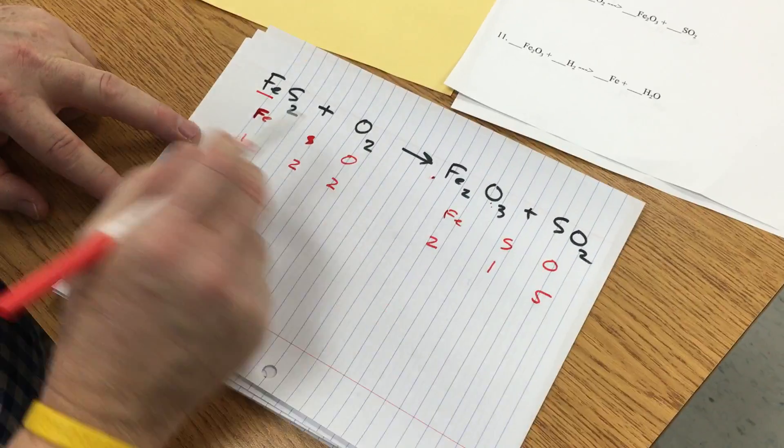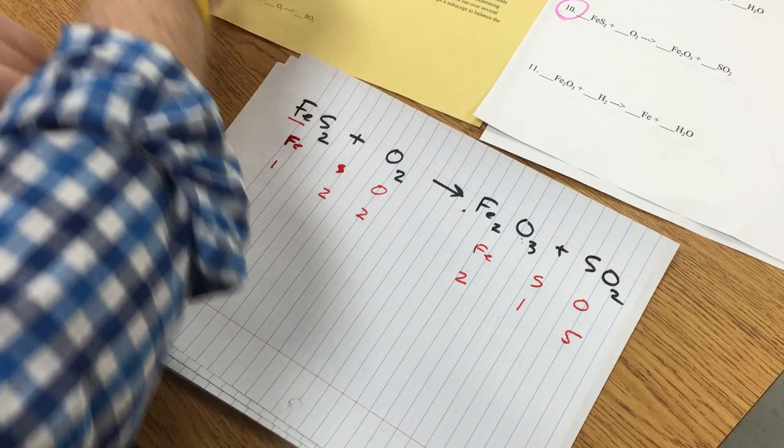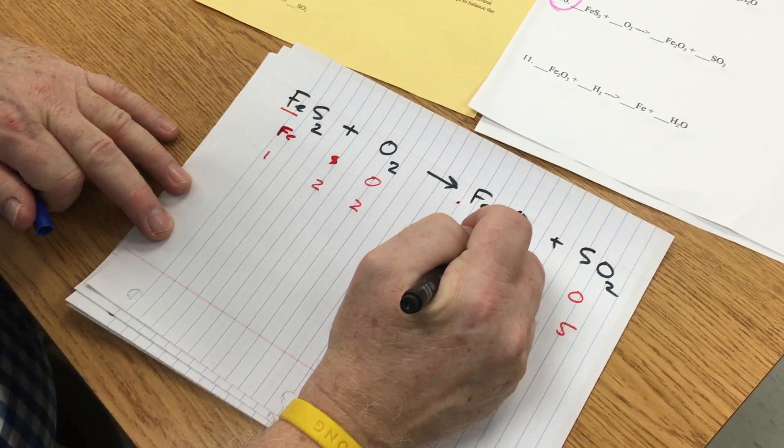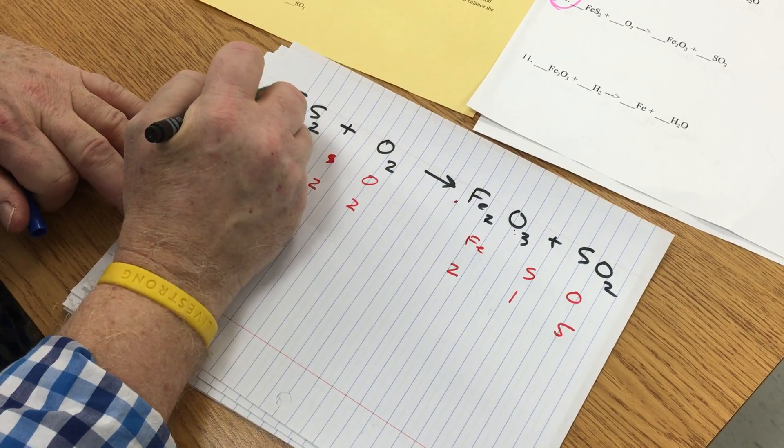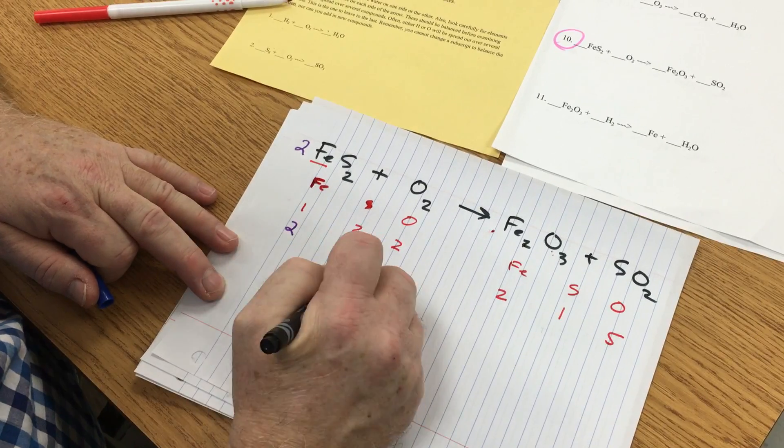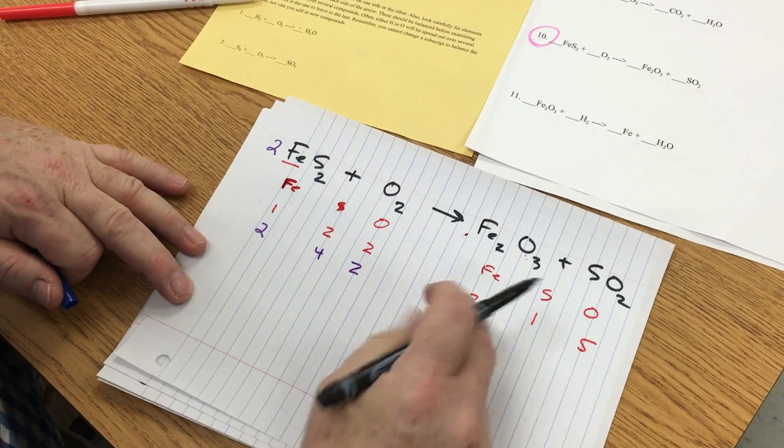So I have two irons here, I need two irons on this side. I'm going to start off by taking my two irons here and making sure I have two irons with a coefficient of two. So that gives me two irons, four sulfurs, and I still have two oxygens. So now my irons are balanced.